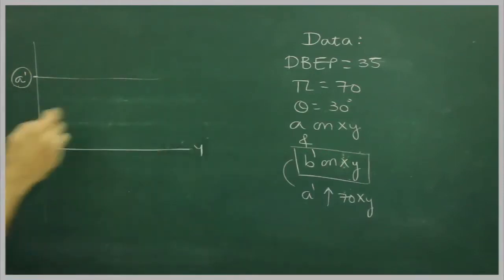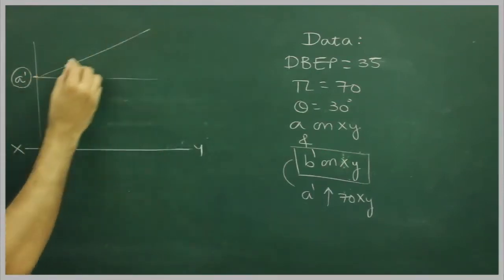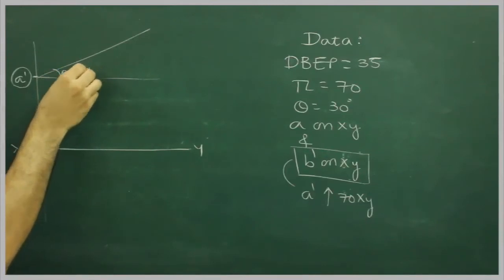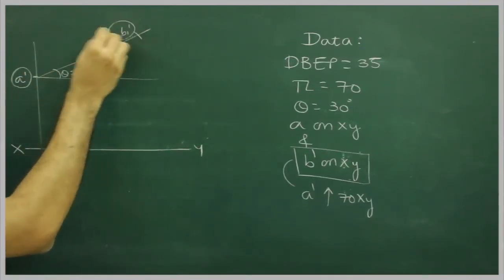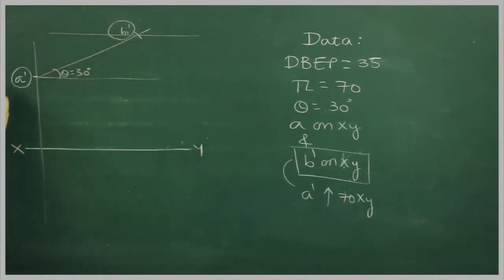After that, we have angle theta, so that we will mark 30 degrees. We will mark true length on it, that is B''. And they have given a DBT also, so that also we can mark.